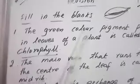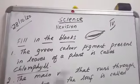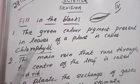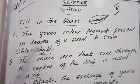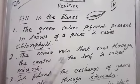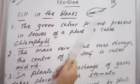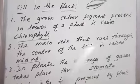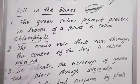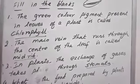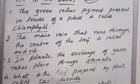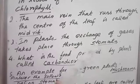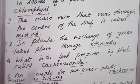The green color pigment present in leaves of a plant is called chlorophyll: C-H-L-O-R-O-P-H-Y-L-L. The main vein that runs through the center of the leaf is called midrib: M-I-D-R-I-B. In plants, the exchange of oxygen takes place through stomata: S-T-O-M-A-T-A, stomata.